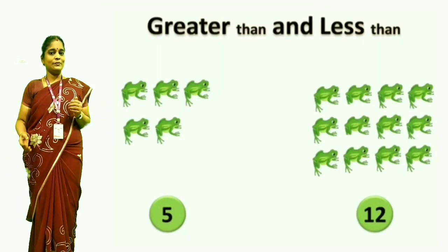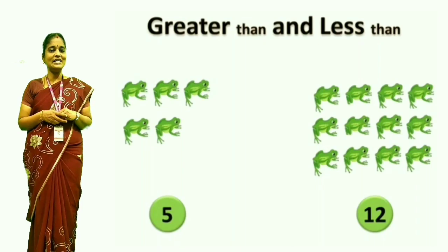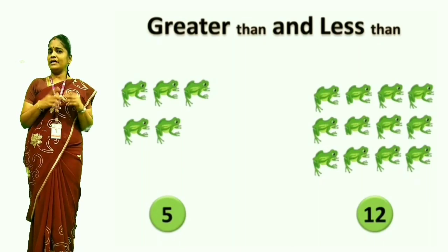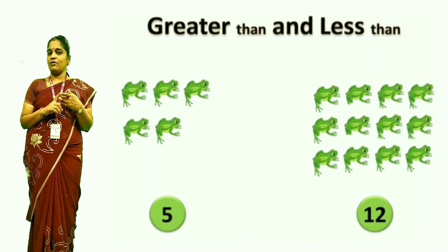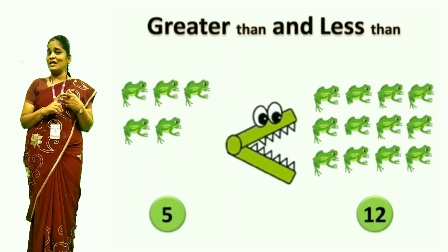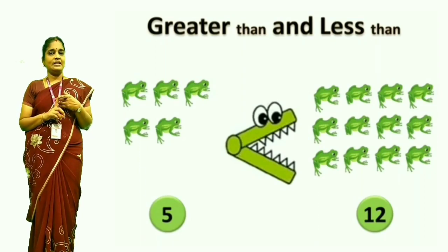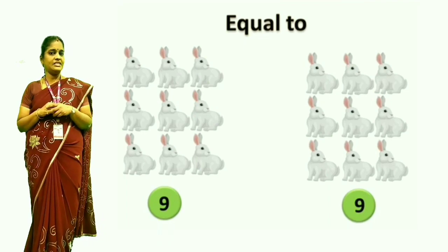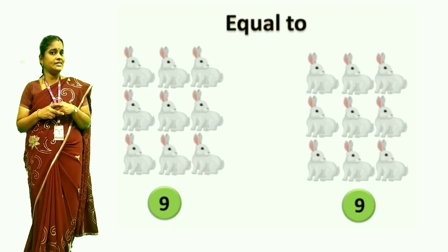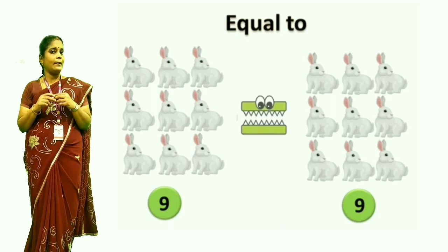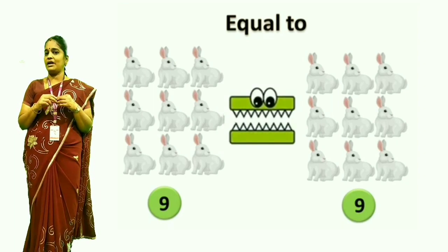Next, how many frogs? Five. One more side, how many frogs are here? Twelve. Now compare these two numbers. Which one is the bigger number? Twelve. So the lesser than symbol will come. Next, how many rabbits are here? Nine. One more side, how many rabbits? Nine. Both the numbers are equal, so equal to symbol will come.